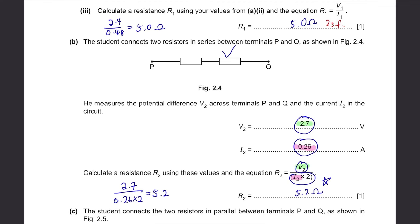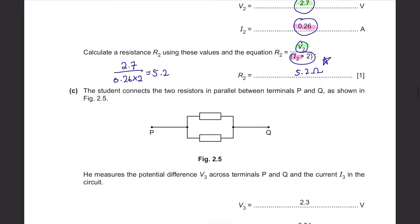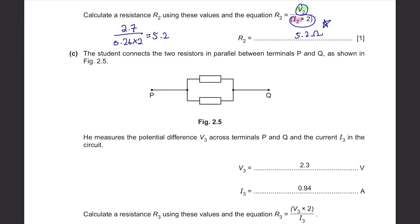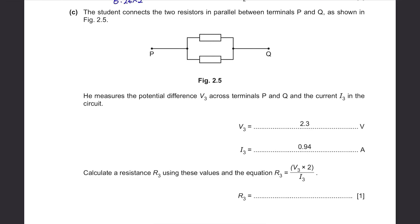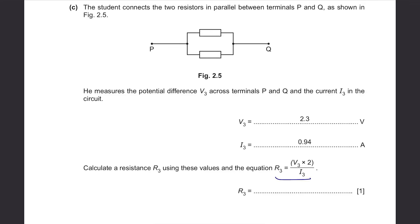Part C: the student connects two resistors in parallel between terminals P and Q. Using V3 equals 2.3 Volts and I3 equals 0.94 Amps, calculate R3 using R3 equals 2 times V3 divided by I3: 2.3 times 2 divided by 0.94 equals approximately 4.9 ohms to 2 significant figures.